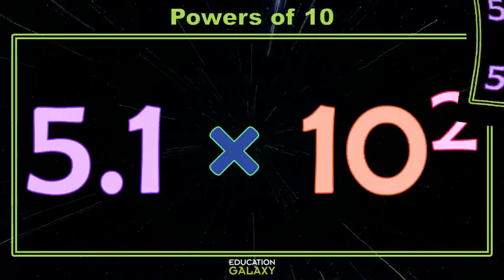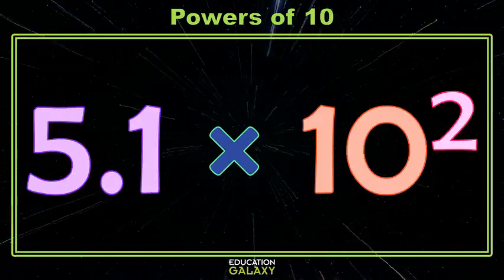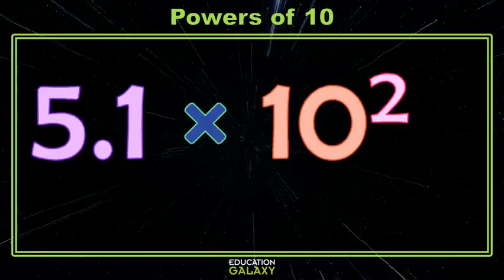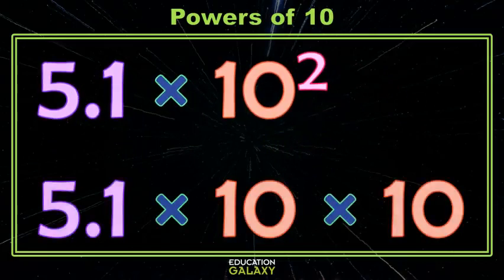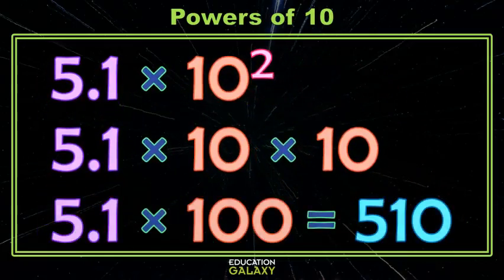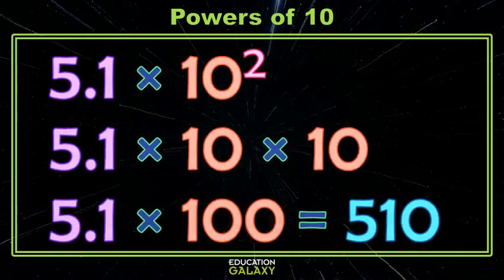Let's try it with a decimal. Here I have 5 and 1 tenth times 10 squared, which I know is 5 and 1 tenth times 10 times 10, 5 and 1 tenth times 100, which is 510. So what happened here?